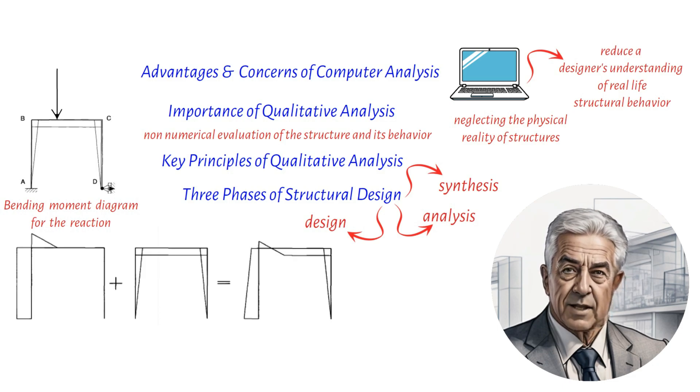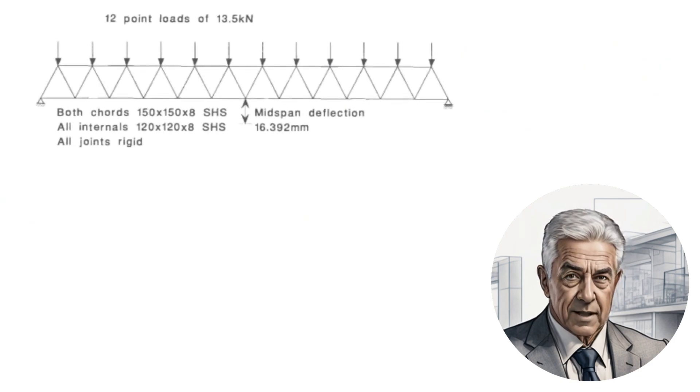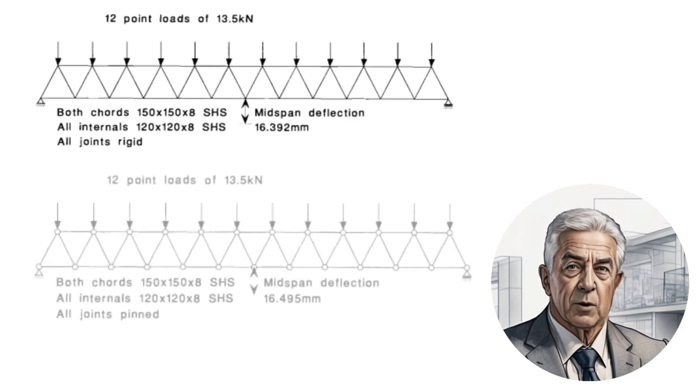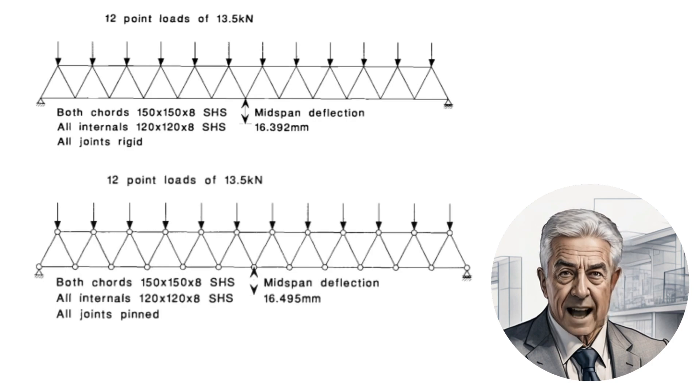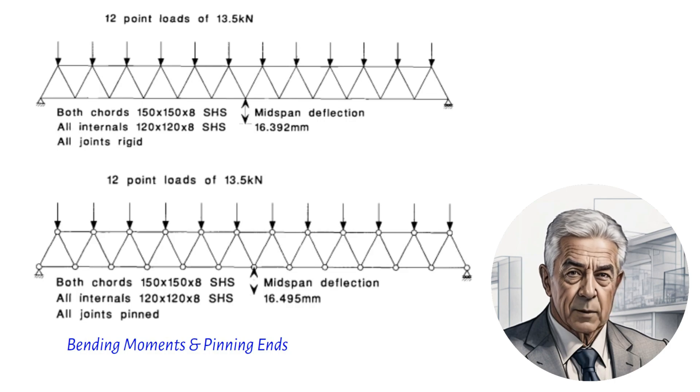Bending moments can still occur in members of a triangulated structure, even with point loading applied to nodes. The designer must find a balance between fabrication simplicity and analysis accuracy. Pinning the ends of diagonals can greatly impact the truss behaviour and can be determined by comparing displacements of models.